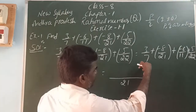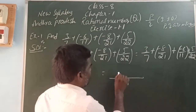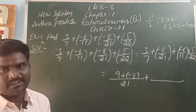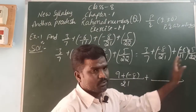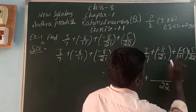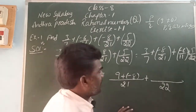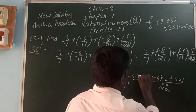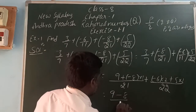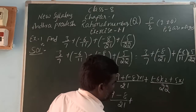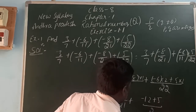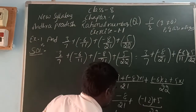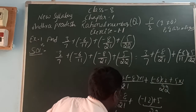The denominator is 7, so we multiply by 3 to get 21. So 3×3 = 9, and we have (-8), giving (9 + (-8))/21. For 11 and 22: we multiply the denominator 11 by 2 to make 22. So (-6)×2 = -12, and plus 5×1 = 5, giving (-12 + 5)/22. That gives us 1/21 and (-7)/22.